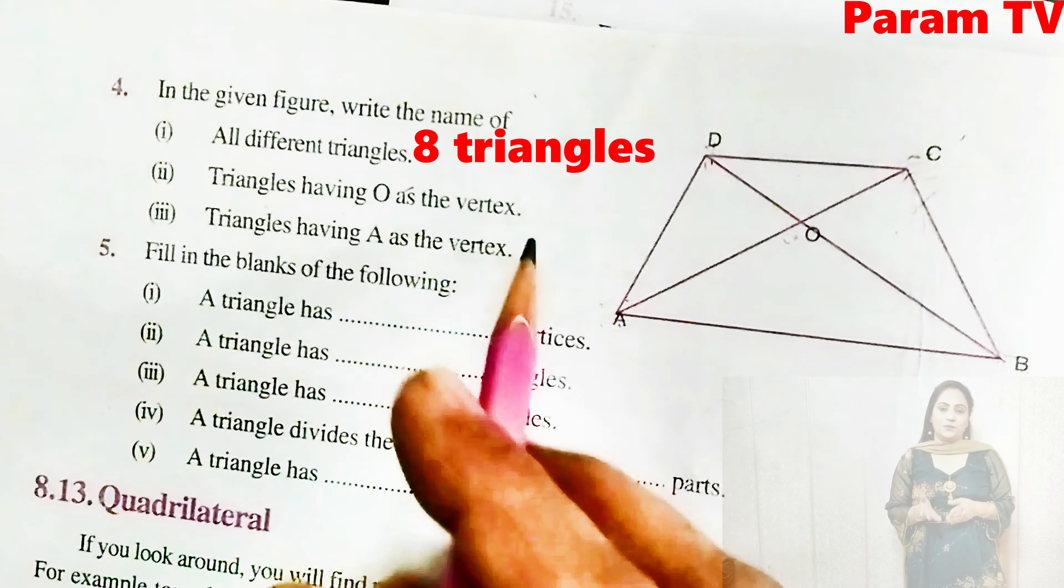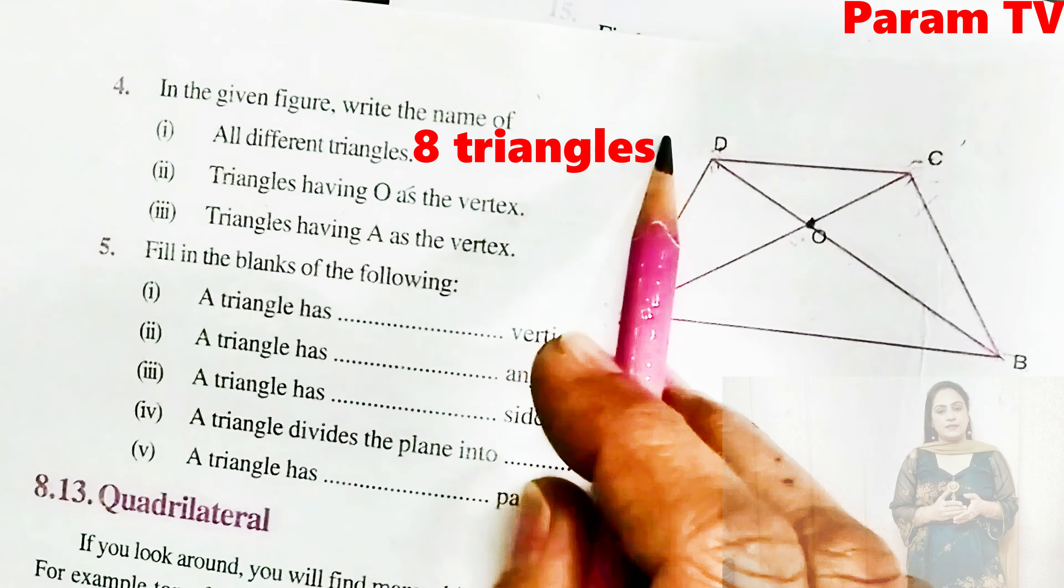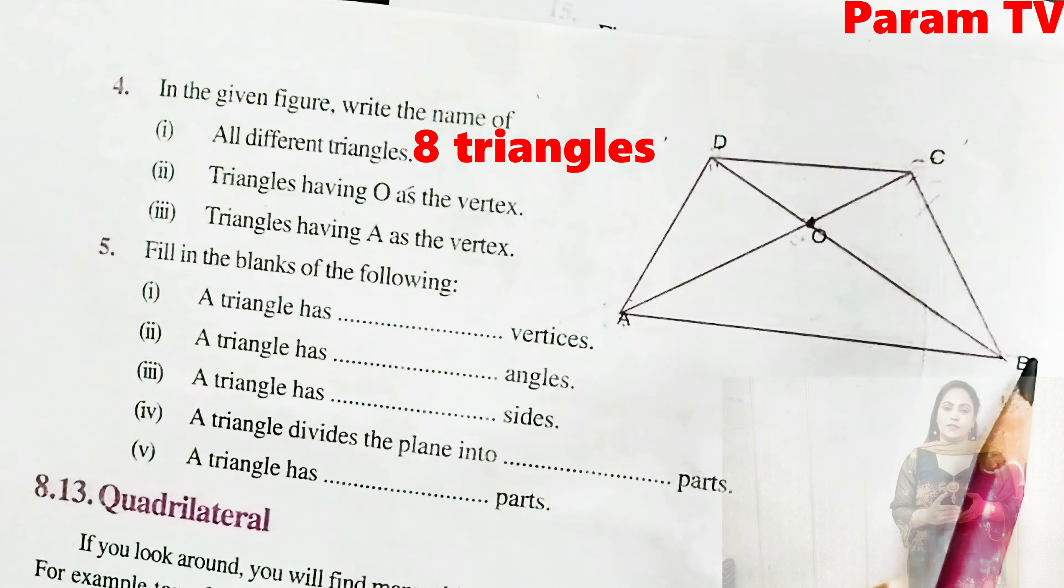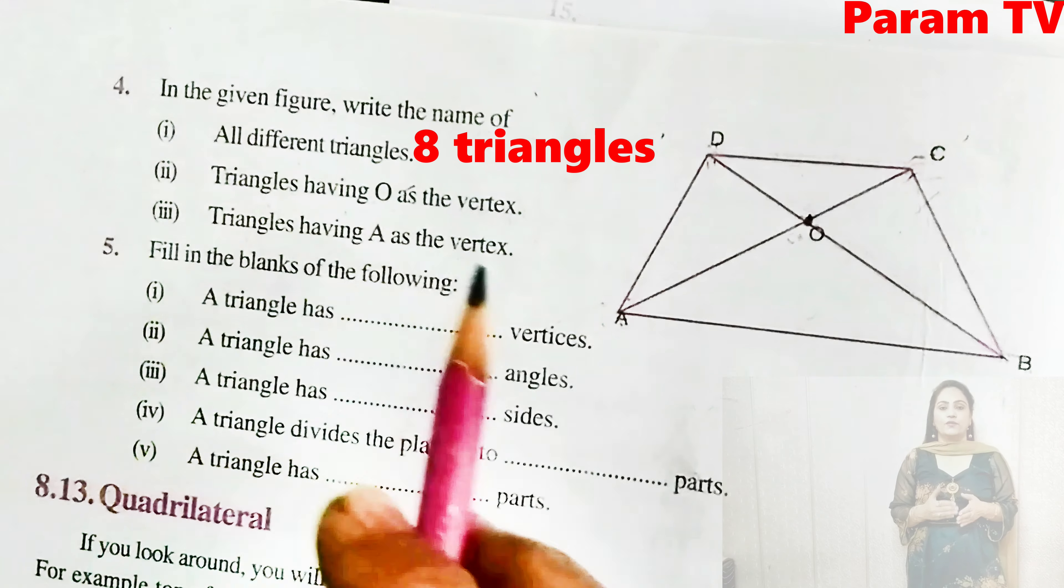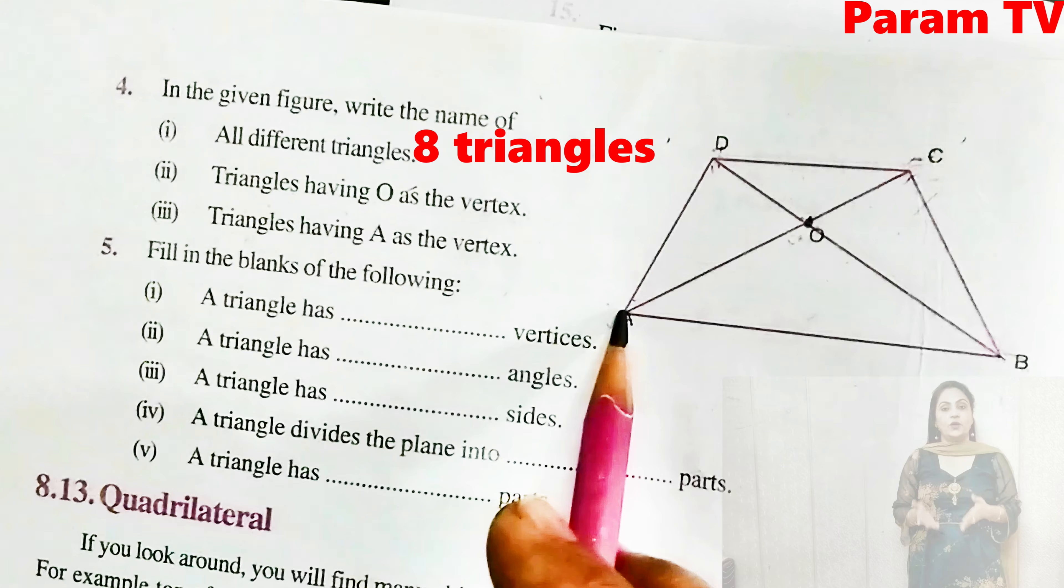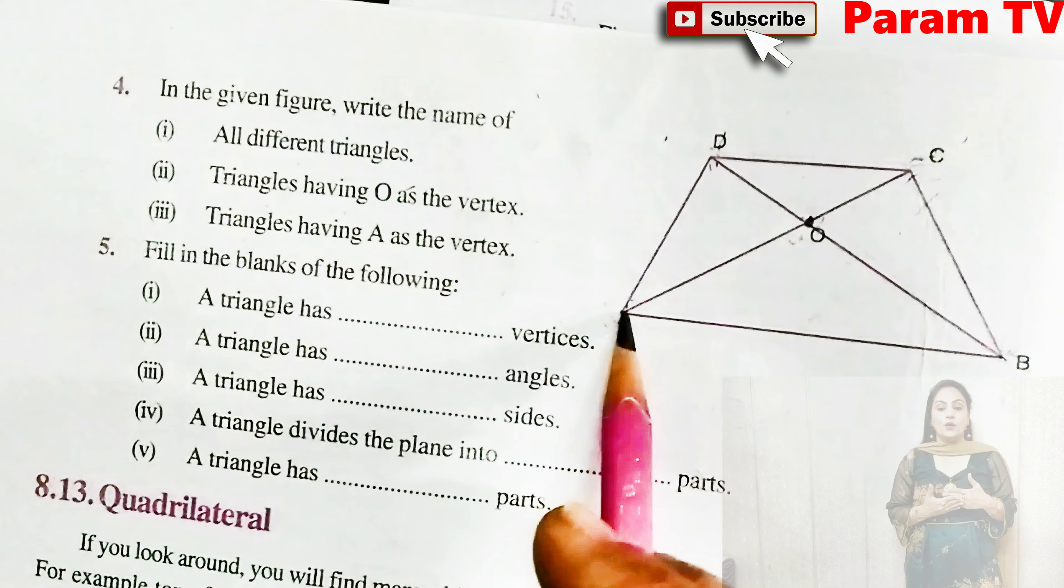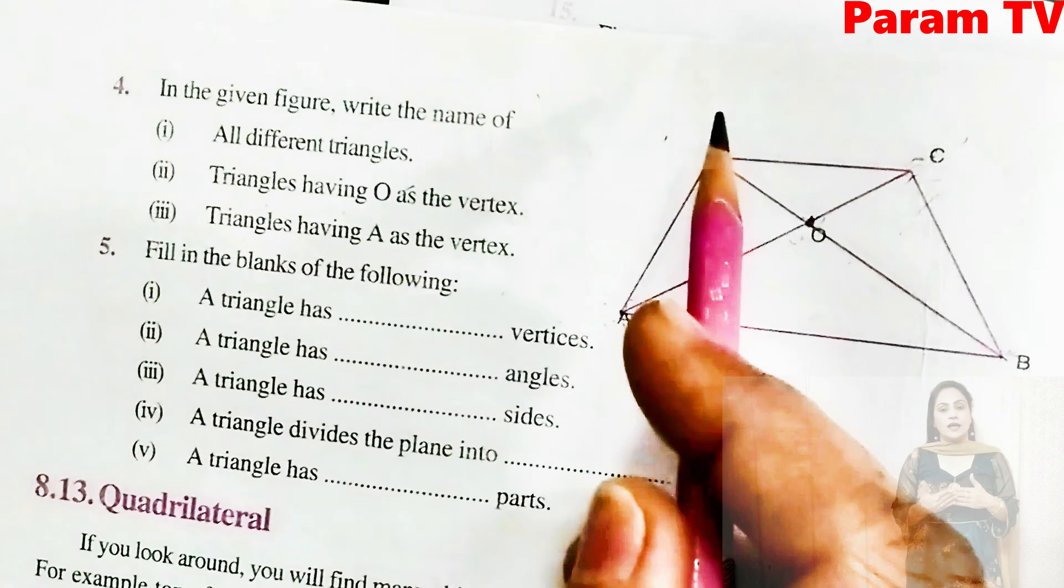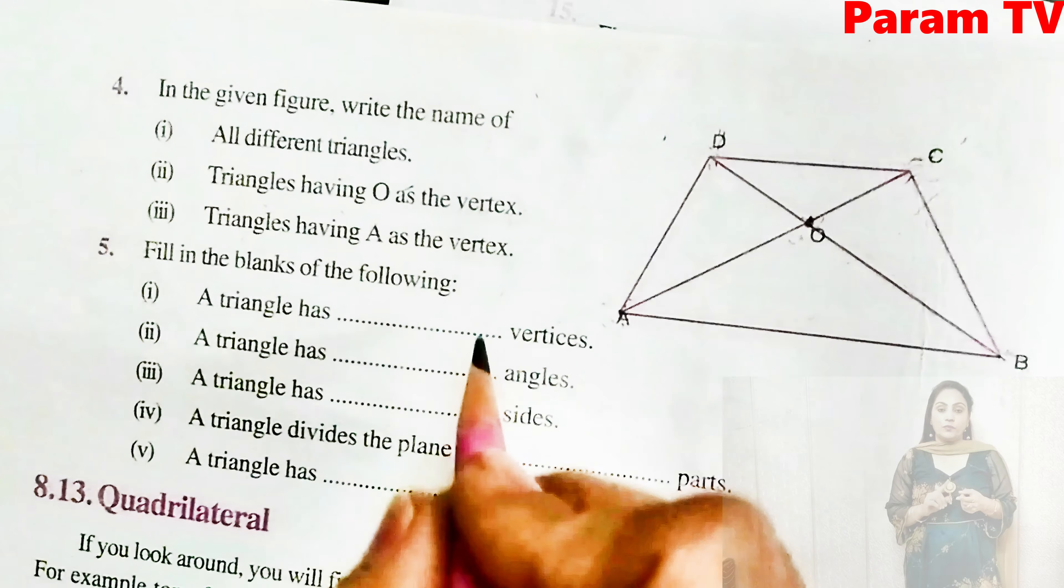Triangles having O as vertex. Which ones have O as vertex? AOD, AOB, BOC, and COD. And triangles having A as vertex. Which have A as vertex? See A vertex ones. One is AOB, one is DAO, one is DAB. So three angles are formed here.